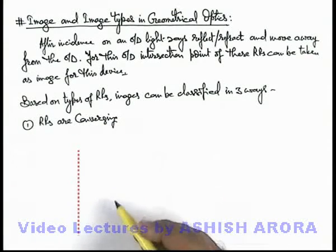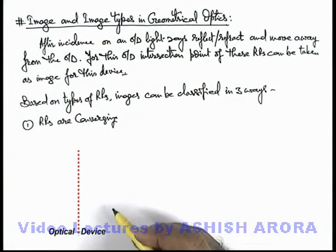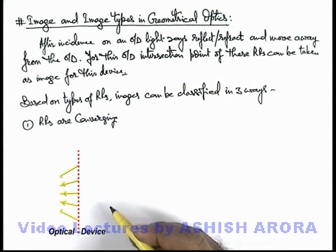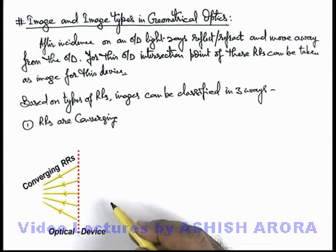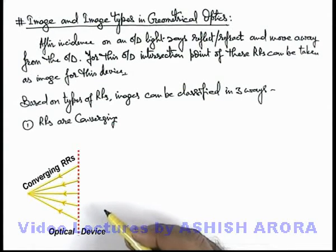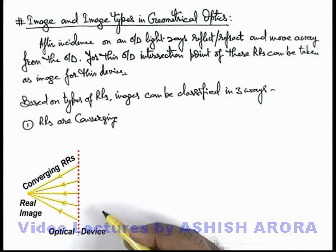If reflected rays coming from an optical device are converging, then these rays will really meet at a point in front of the optical device. This point is defined as a real image, because the reflected rays are actually meeting there.